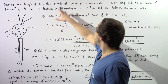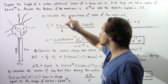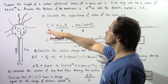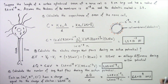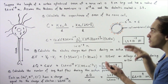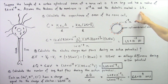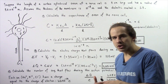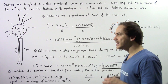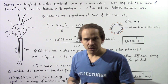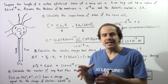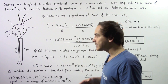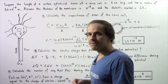Suppose the length of a certain cylindrical axon of a nerve cell is 8 centimeters long and has a radius of 8 micrometers. Assume the thickness of the membrane is about 10 to the negative 8 meters, and the dielectric constant for things found inside the cell membrane is equal to 2.8. The phospholipids inside the cell membrane act as a dielectric, and the inner and outer regions of the cell membrane act as a parallel plate capacitor, since by definition a capacitor is anything that stores electric charge.